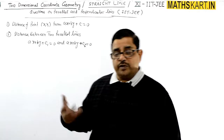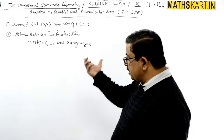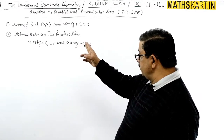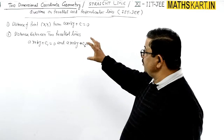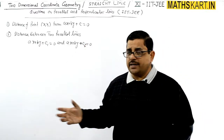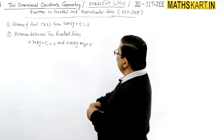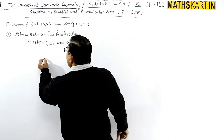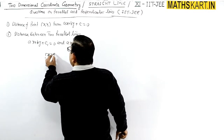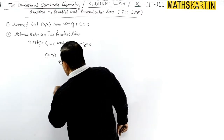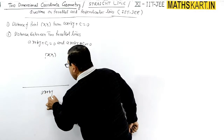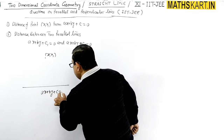We will see two very easy applications. The first is the distance of a point from a line. One point and one line are given, and the line is in the form ax plus by plus c equal to zero.